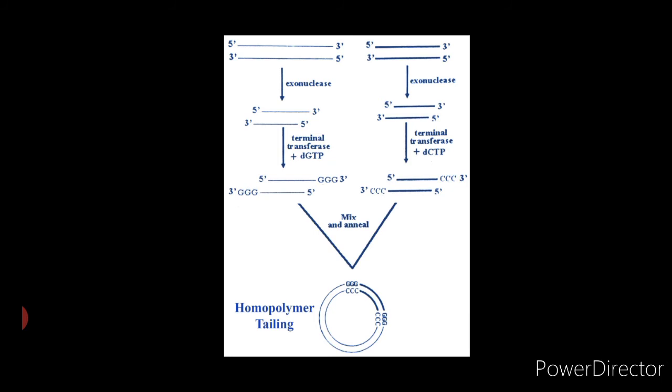However, conditions have been found in which the enzyme will extend even the shielded 3' OH of a 5' cohesive terminus generated by EcoRI. Using precursor dGTP, poly dG is added to both the 3' cut ends of the vector, while poly dC is added to the 3' end of the foreign DNA. The vector and the insert can then be joined by annealing the poly dG with the poly dC tails and then ligating them with DNA ligase.